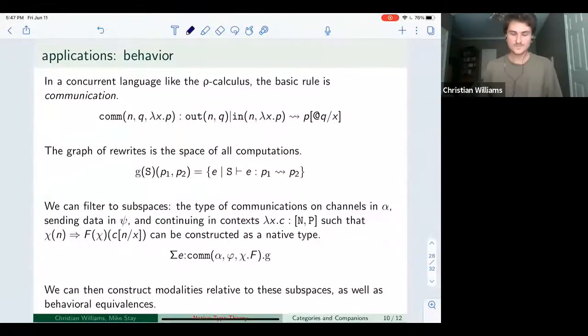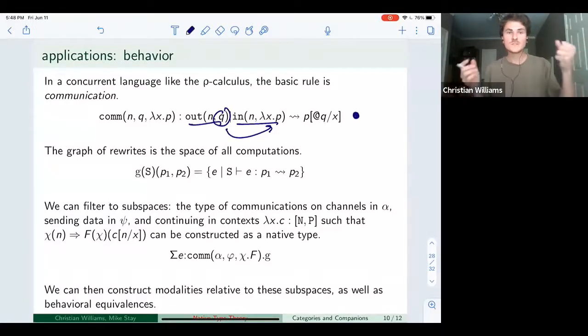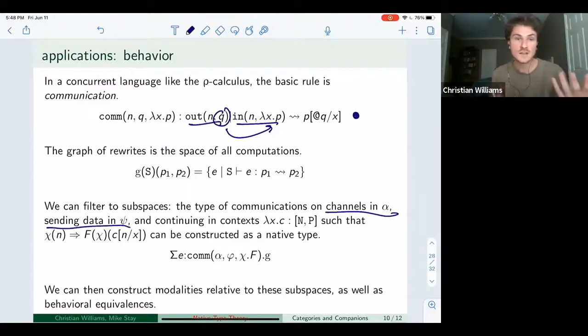So as an example application, in the rho calculus, we had a basic rule of communication that two parallel processes can communicate a message. And from this, you can generate this huge graph where the vertices are programs and the rewrites are communications and using native types, you can filter to sub graphs. So you could take a network running this language and you say, I want to restrict to communications on a certain type of channel alpha, sending a certain type of channel psi, and continuing in a certain type of context. I didn't have time to talk about this, but it's like a dependent Tom saying, a context so that when you receive a certain type of data, you continue as a certain type of program that depends on that data.